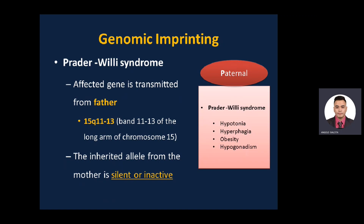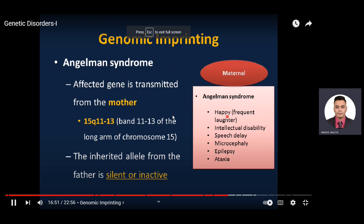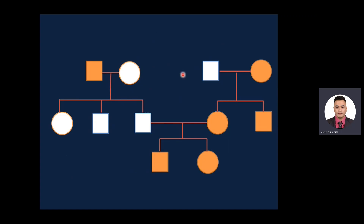In Angelman syndrome, the opposite occurs: the affected gene is transmitted from the mother. It is the same gene as Prader-Willi, located at band 11.13 on the long arm of chromosome 15, but transmitted from the mother. The inherited allele from the father is silent or inactive. Angelman syndrome presents with a happy personality, frequent laughter, intellectual disability, speech delay, microcephaly, epilepsy, and ataxia. Remember: Angelman is maternal.